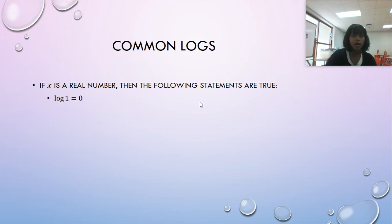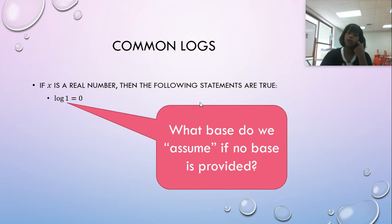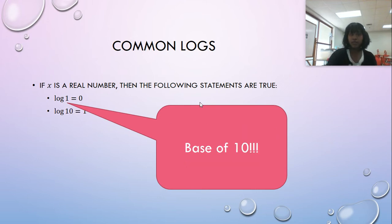Here are some common logs. Log base one is zero. You have to know that always. What about log? What base do we assume if no base is provided? It is base 10. Log base 10 is one. If you can't see that, that's what this says over here. Log base 10 to the X just becomes 10 because our base is right here, it's base 10, and this becomes X. These are your common logs because we know we are in base 10.